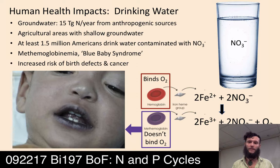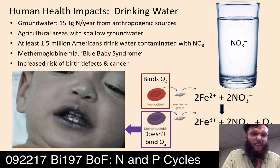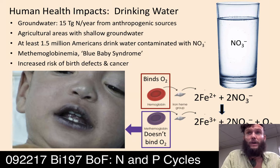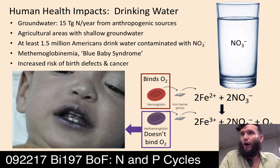One of those effects is on our drinking water. There are 15 teragrams — 15 billion grams — of nitrogen per year that end up in our groundwater from anthropogenic sources. That's an enormous amount of nitrogen.